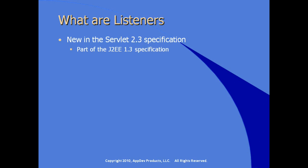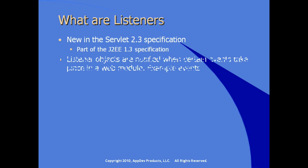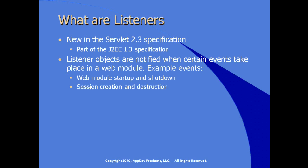They became part of the J2EE 1.3 specification, therefore available in 1.4 and currently available in the Java EE 5 specification. Listener objects use the standard Java listener interface and are notified when certain events take place in a web module — for example, when the web module starts up or shuts down, or as an HTTP session is created or destroyed.